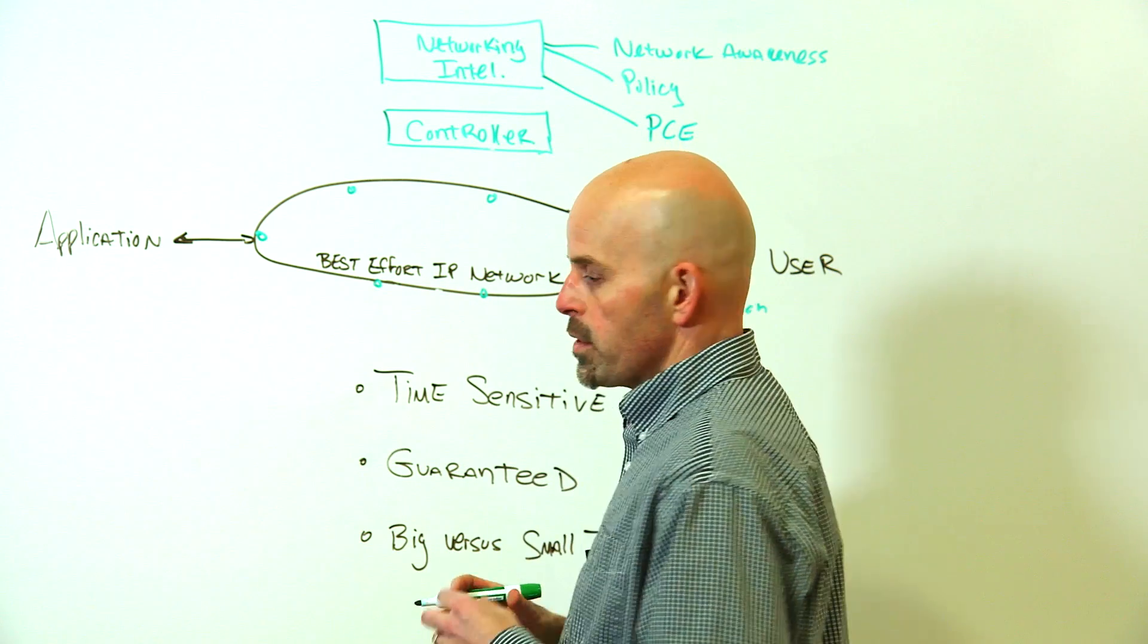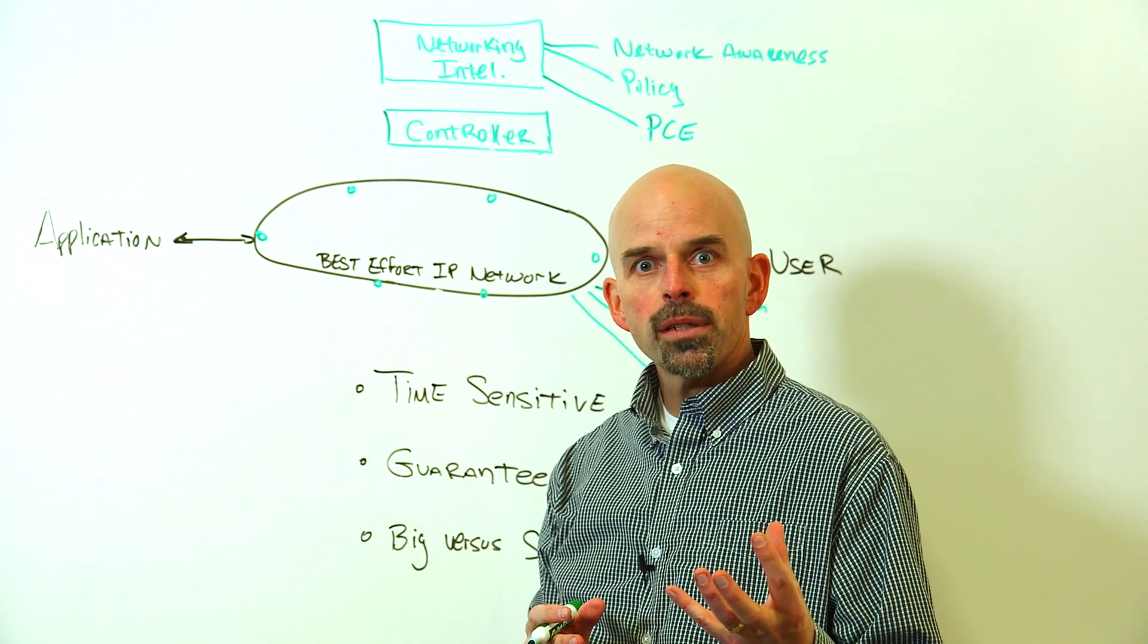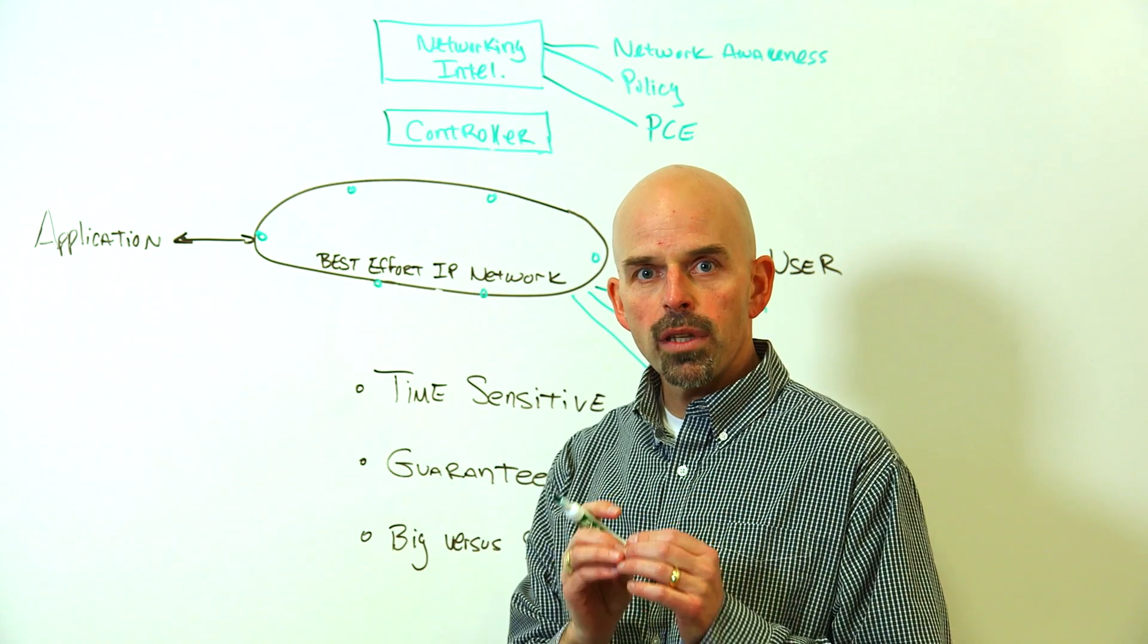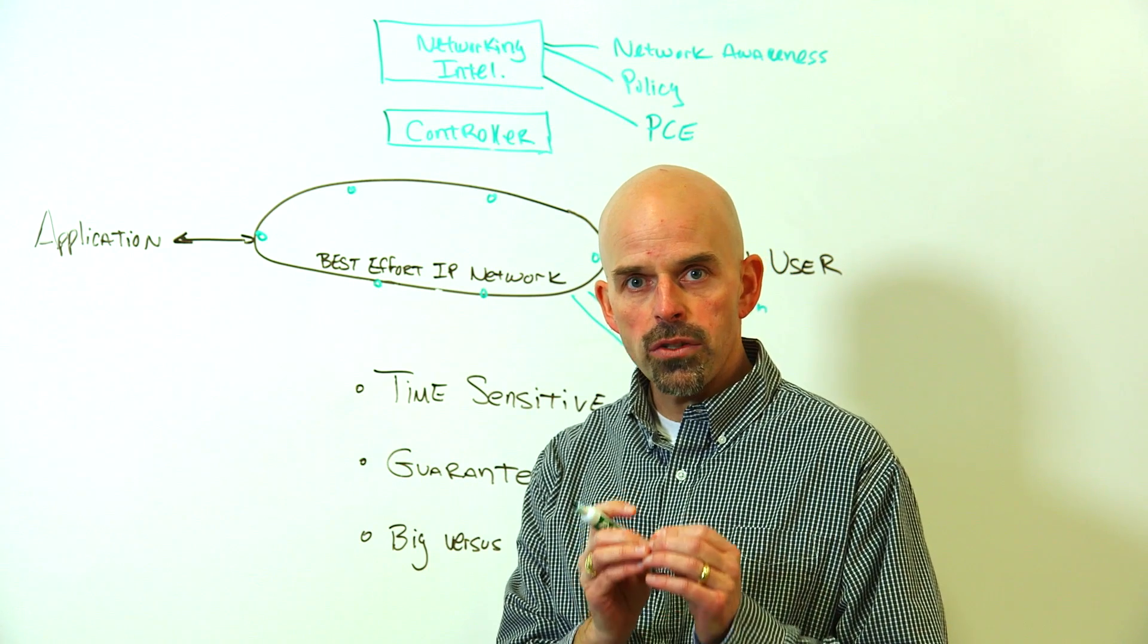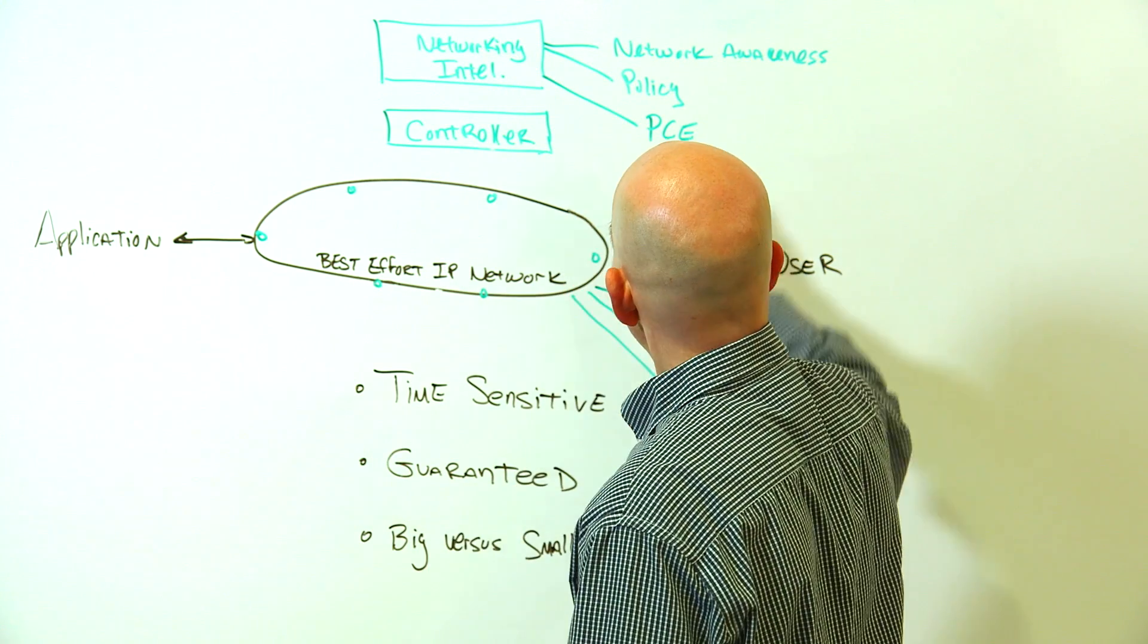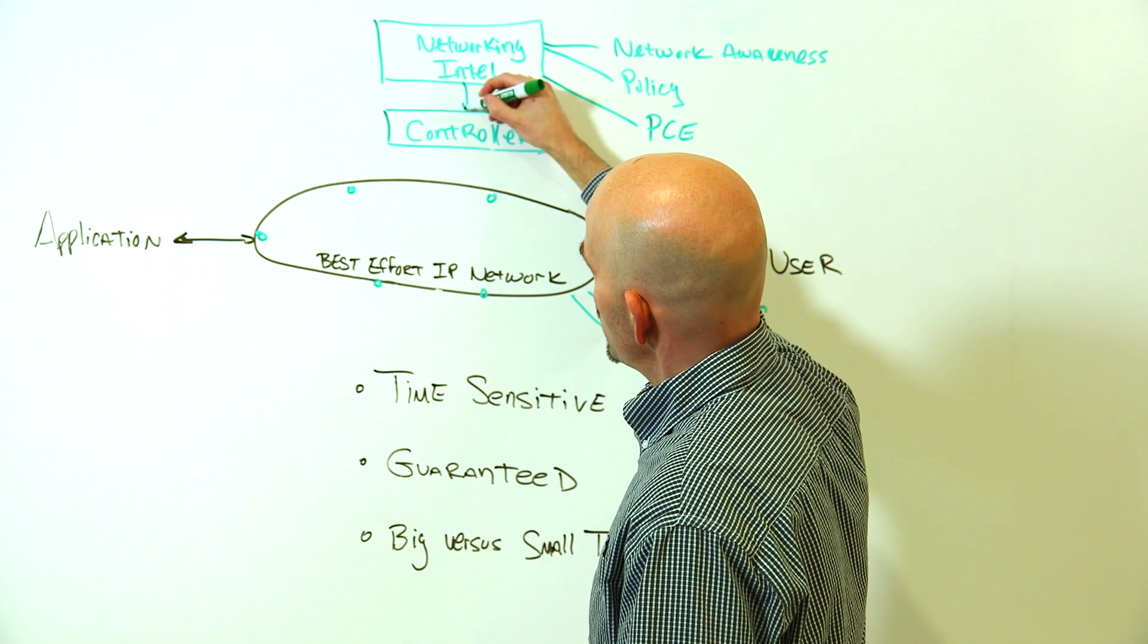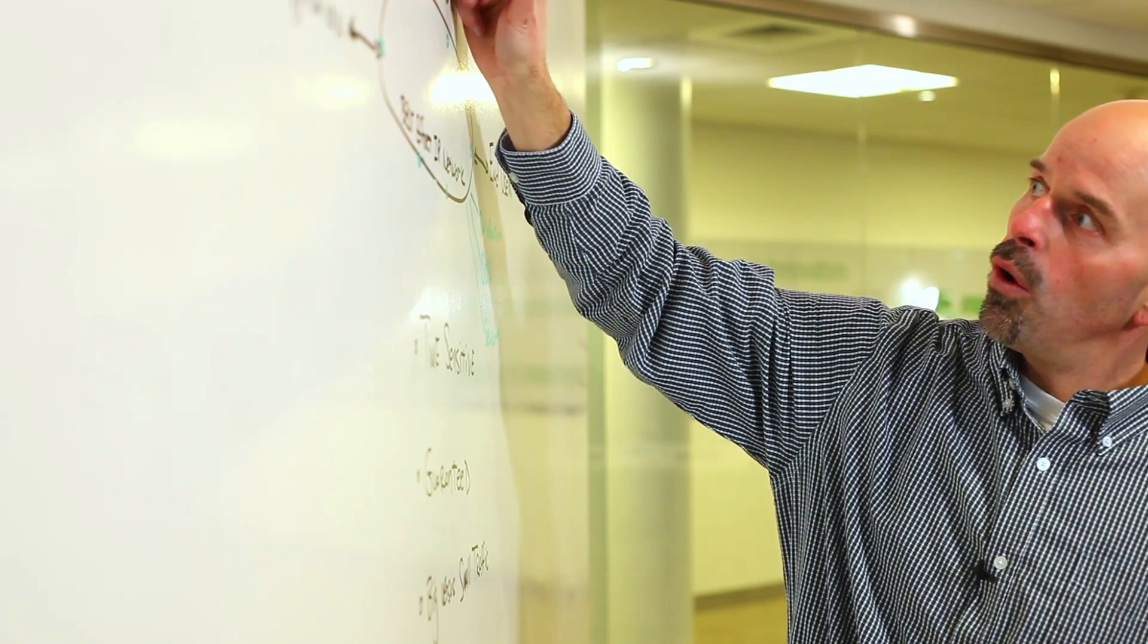This is taking knowledge of the network, marrying it up with an application request, and figuring out the best way for the network to service that application request in real time. So once you have these three pieces in play, you now have the ability to exercise control over the network.